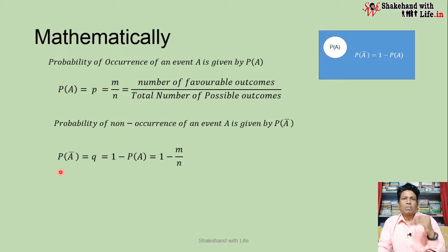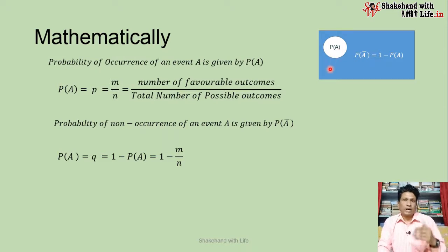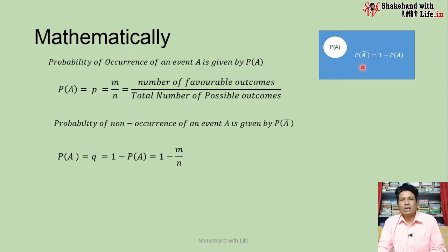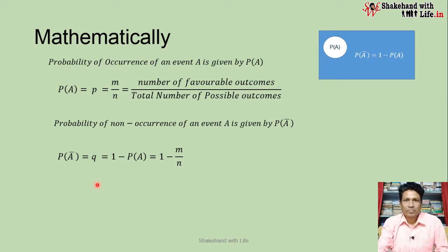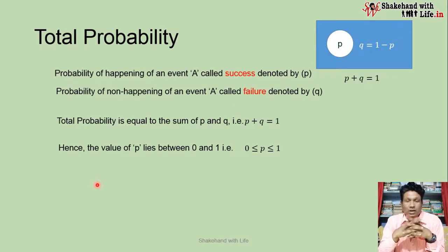So P(A) = m/n is the probability of occurrence of an event, and P(A bar) is the probability of non-occurrence of an event. We have a diagram here: in the white circle we have the probability for event A, and in the rectangle we have P(A bar) equal to 1 minus P(A). This represents the total probability for the classical approach.